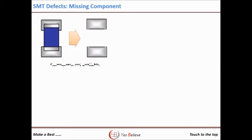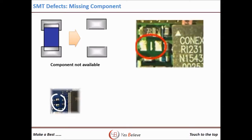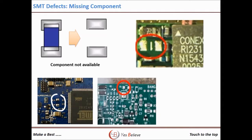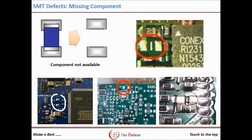Component missing is related to the component mounting process. There are several reasons, such as wrong nozzle selection, nozzle blockage, low nozzle suction level, feeder issues, and no use of backup pins. Whenever this defect occurs, first check the points related to the vacuum line. If everything is okay, then verify the mount settings. This is one of the most difficult defects to eliminate in SMT.